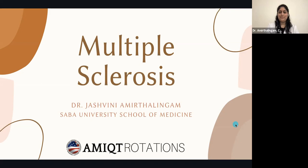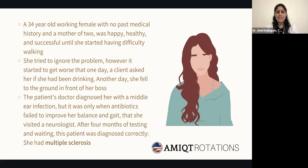A 34-year-old working female with no past medical history and a mother of two was happy, healthy, and successful until she started having difficulty walking. She tried to ignore the problem; however, it started to get worse — one day a client asked her if she had been drinking, and another day she fell down in front of her boss. Her doctor diagnosed her with a middle ear infection, but it was only when antibiotics failed to improve her balance and gait that she visited a neurologist. After four months of testing and waiting, this patient was correctly diagnosed with multiple sclerosis.